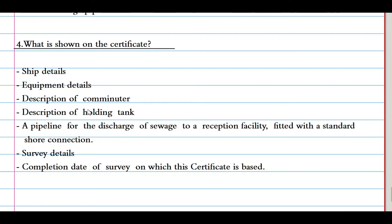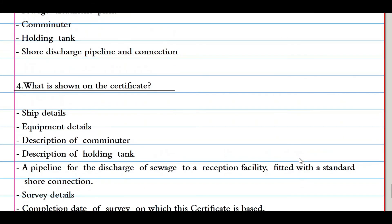The certificate shows the ship's details, equipment details, description of the comminuter, description of the holding tanks, the pipeline for discharge of sewage to a reception facility fitted with a standard shore connection, survey details, and the completion date of the survey on which the certificate is based.